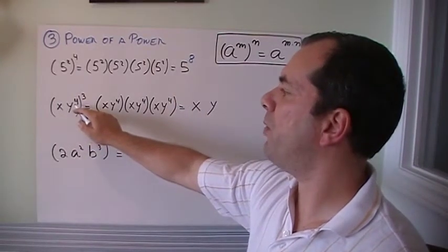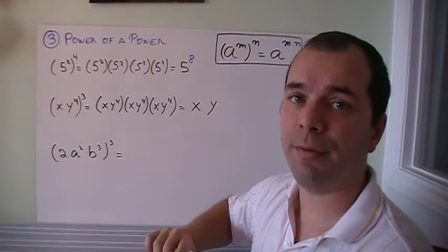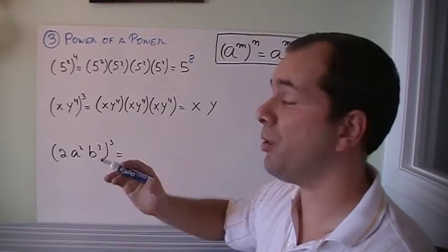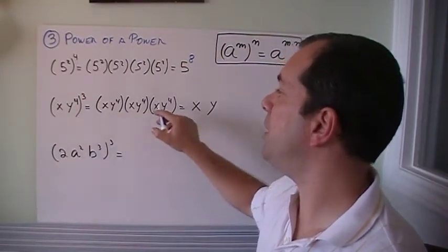Okay, well, what if it's x, y to the power of 4, the whole thing to the power of 3? Well, let's do it the long way and then the short way. That means that I'm going to have this bracket 3 times.